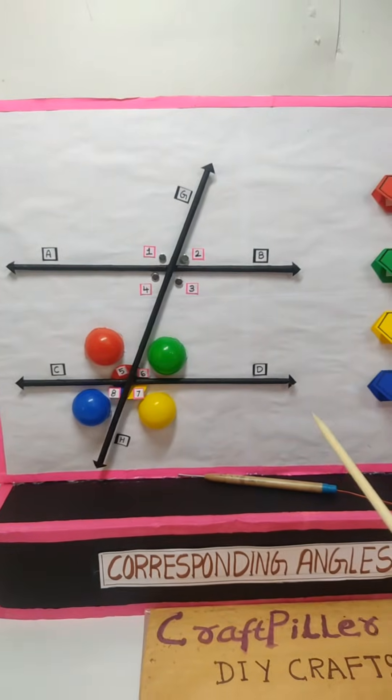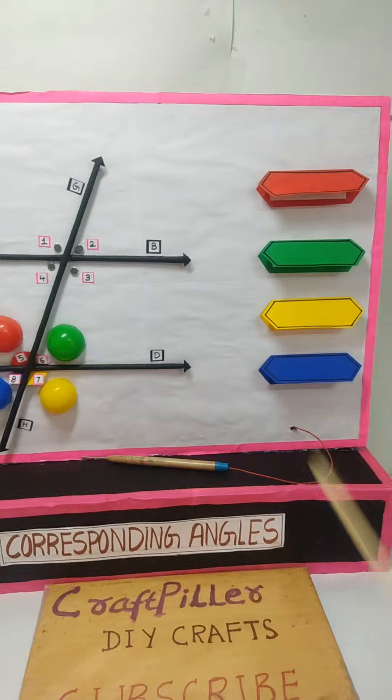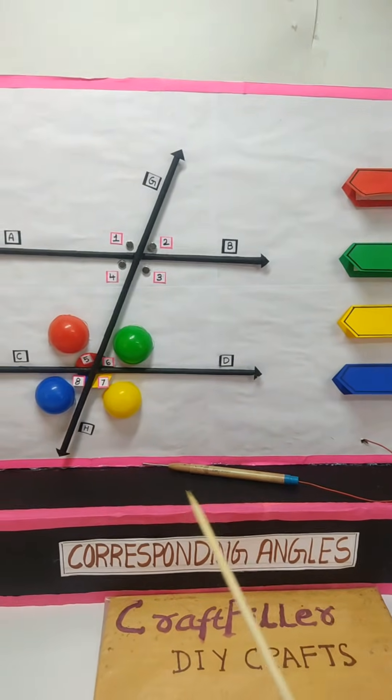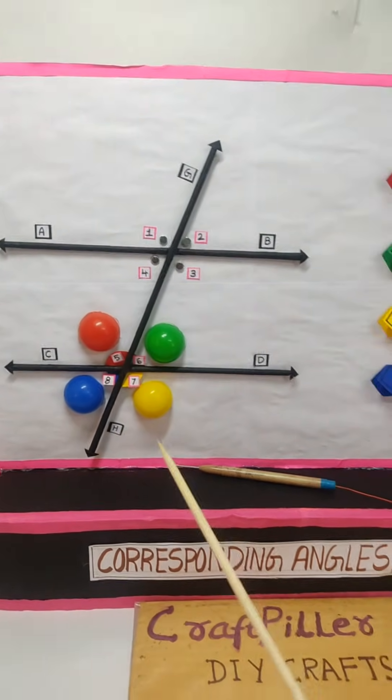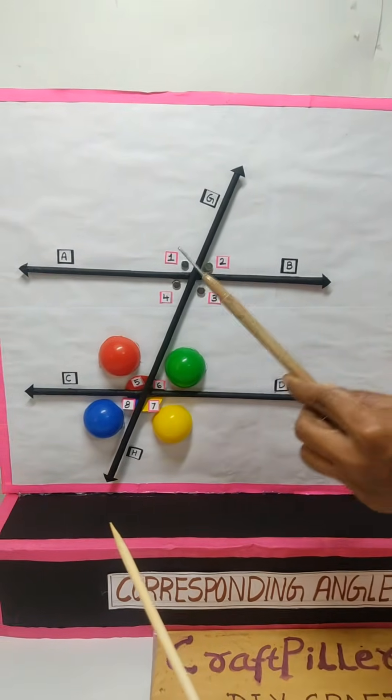In this working model, now we are going to demonstrate how this working model really works. Now by making use of this probe, we are going to touch these corresponding angles then corresponding lights will glow.